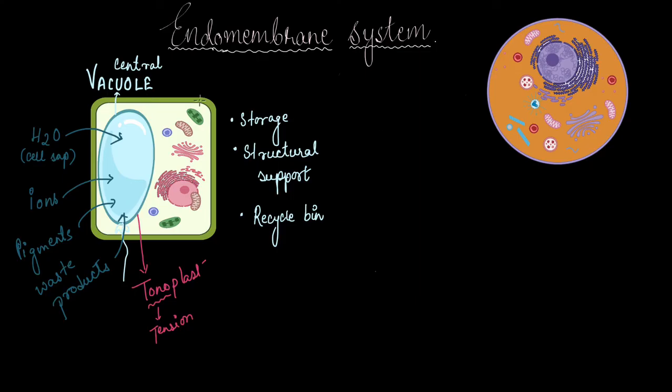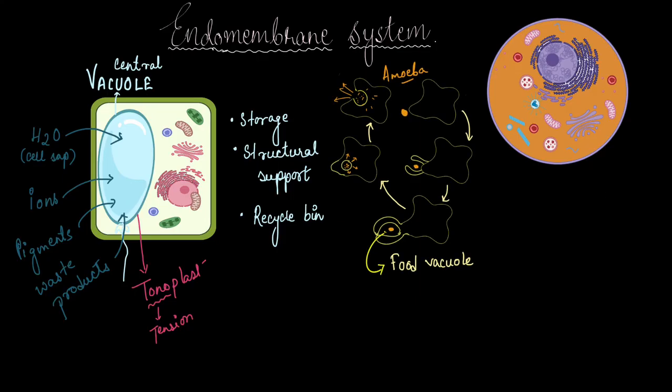Now again, this is not the only kind of vacuole that we get to see in living cells. There are other different kinds, and one of them is called the food vacuole, which we see in single cellular organisms. And to explain it to you I have taken the help of amoeba.